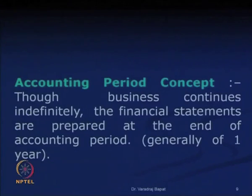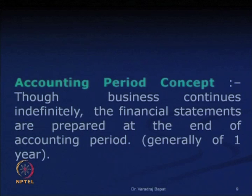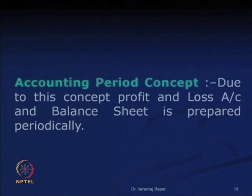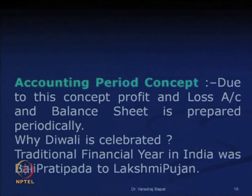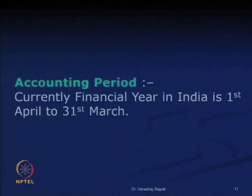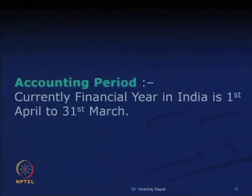The accounting period concept states that the whole business cycle is divided into fixed periods and financial statements are prepared at the end of these periods. Due to this concept, the profit and loss account and balance sheet are prepared and reported periodically. Traditionally, Diwali was the financial year in India. Currently, the financial year followed is from 1st April to 31st March. In the US, it is from 1st January to 31st December, and different countries use different accounting periods.